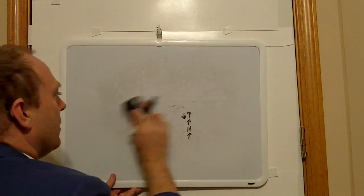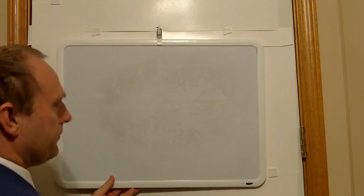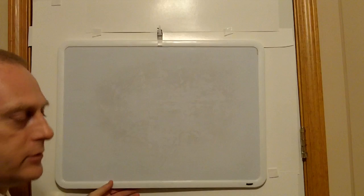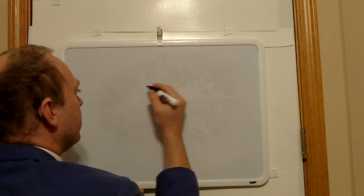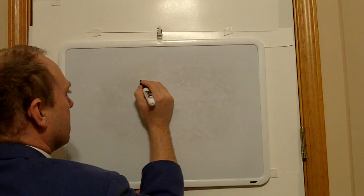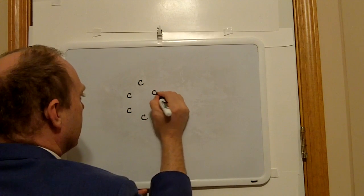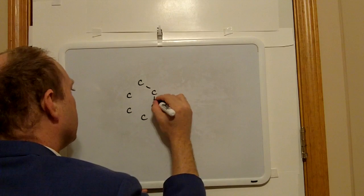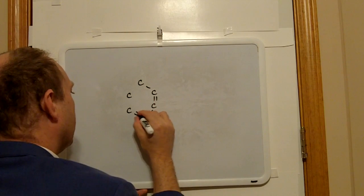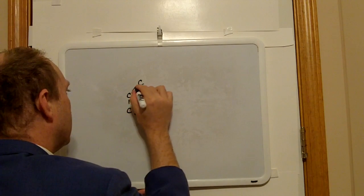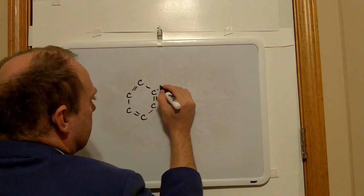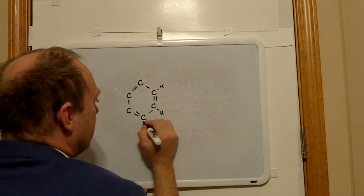However, when it comes to benzene, standard model Lewis structures fail to represent the molecule correctly. They represent benzene in this manner, alternating single and double bonds because that's all they've got are single and double bonds. So I represent benzene this way.